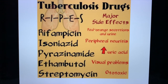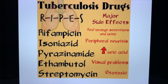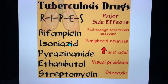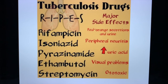Take time to go over the major side effects that come out in exams for your first-line anti-TB drugs. Remember the mnemonic RIPES — Rifampicin causes red-orange secretions and urine; Isoniazid causes peripheral neuritis; Pyrazinamide causes increased uric acid; Ethambutol causes visual problems; Streptomycin is ototoxic.